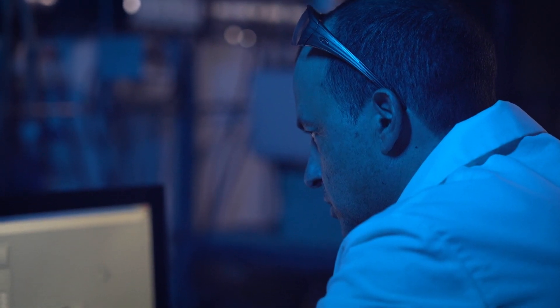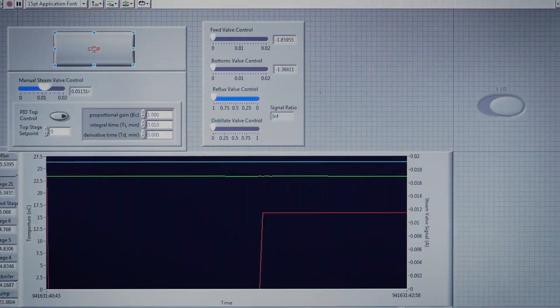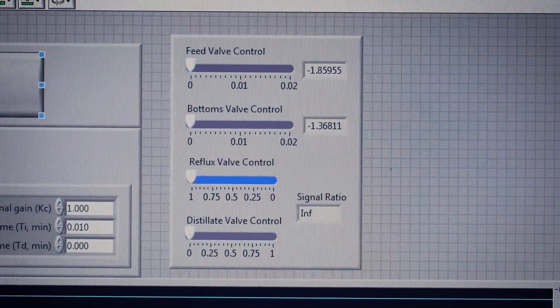Chemical engineering hasn't changed really for many decades. The technology, the equipment gets advanced, the controlling of the equipment gets advanced, but the process is the same. Theory still applies and the lab still applies.